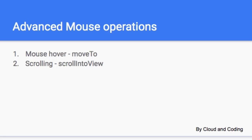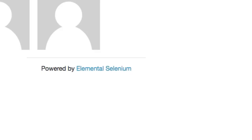In this lecture I will explain how you can do mouse operations like doing the mouse over and scrolling to a specific element. You can use the move_to method to do the mouse over operation, and if you want to scroll to a certain element you can use the scroll_into_view method. Let us see how to do these operations in the live code.